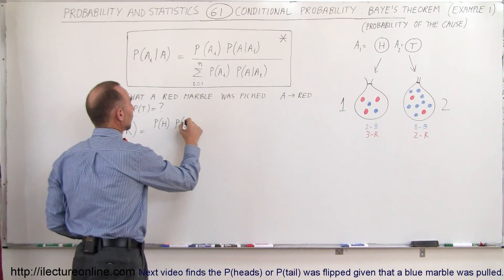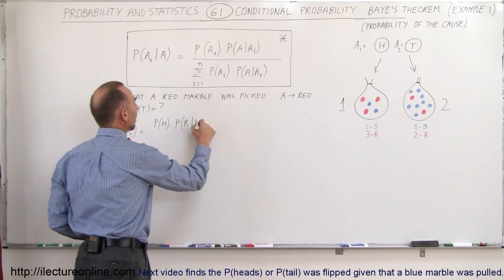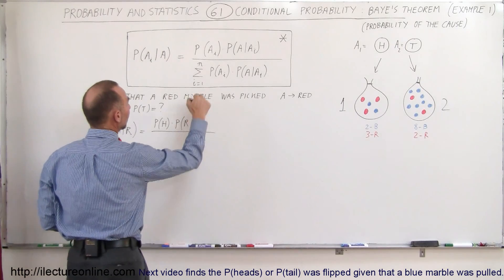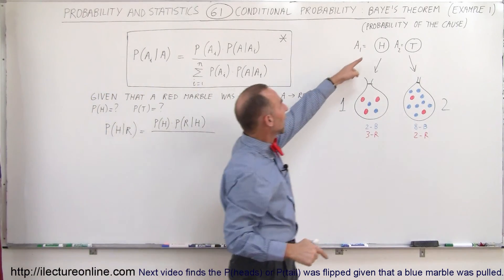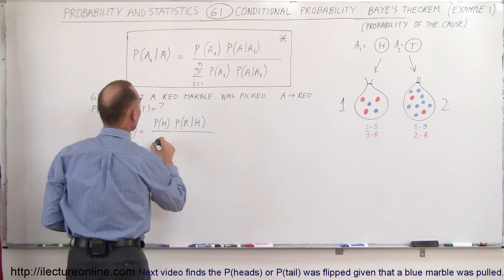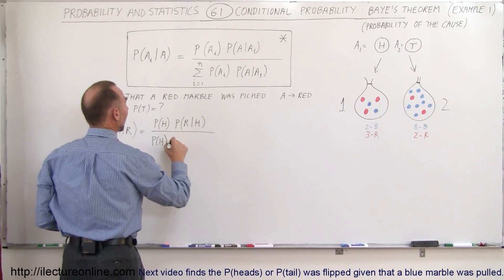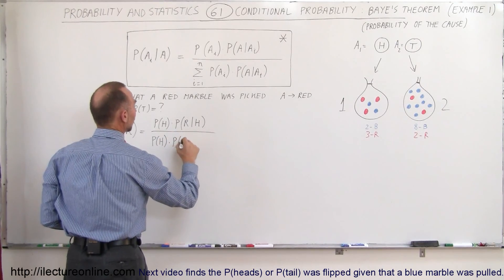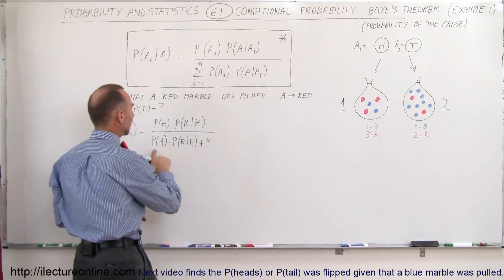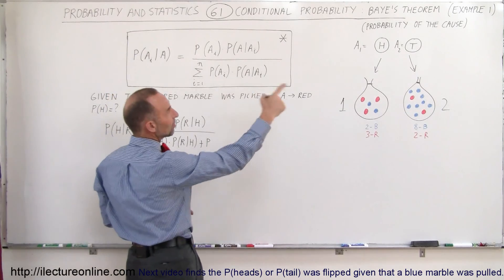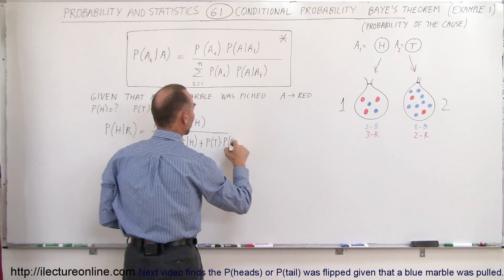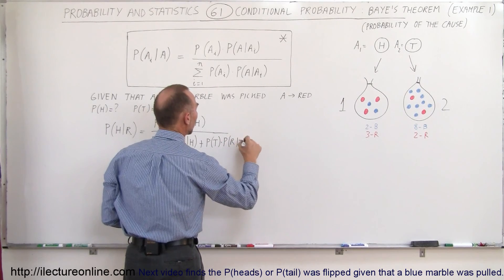So what is the probability that we had a red marble provided that we tossed heads, divided by the sum of all possibilities in the denominator? First, i equals 1 means heads, and i equals 2 means tails. So the denominator is the probability of heads times the probability of picking a red marble given heads, plus the probability of tails times the probability of picking a red marble given tails.